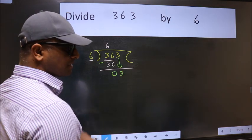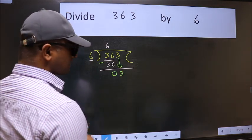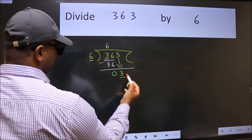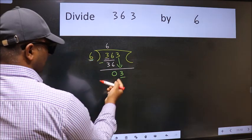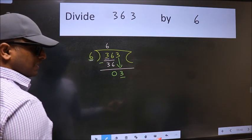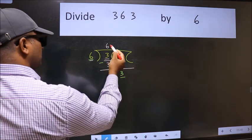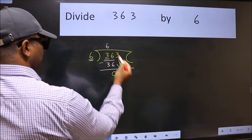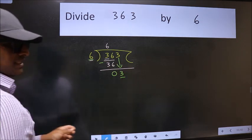After this step, the mistake happens and the mistake is this. Here we have 3 and here 6. 3 is smaller than 6. So what many do is they directly put dot, take 0, which is wrong.